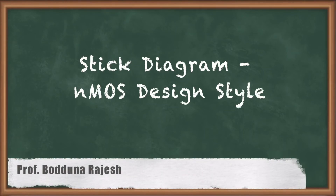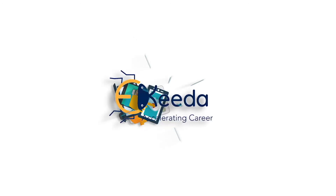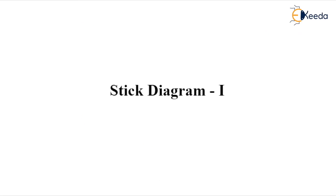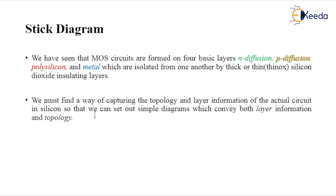Today's topic is stick diagrams. Before going to stick diagrams, let us discuss some points. MOS circuits are formed on four basic layers — recall our fabrication process topic. The four basic layers in MOS fabrication are: n-diffusion, p-diffusion, polysilicon, and metal. All those are isolated from one another by a thin silicon dioxide material.